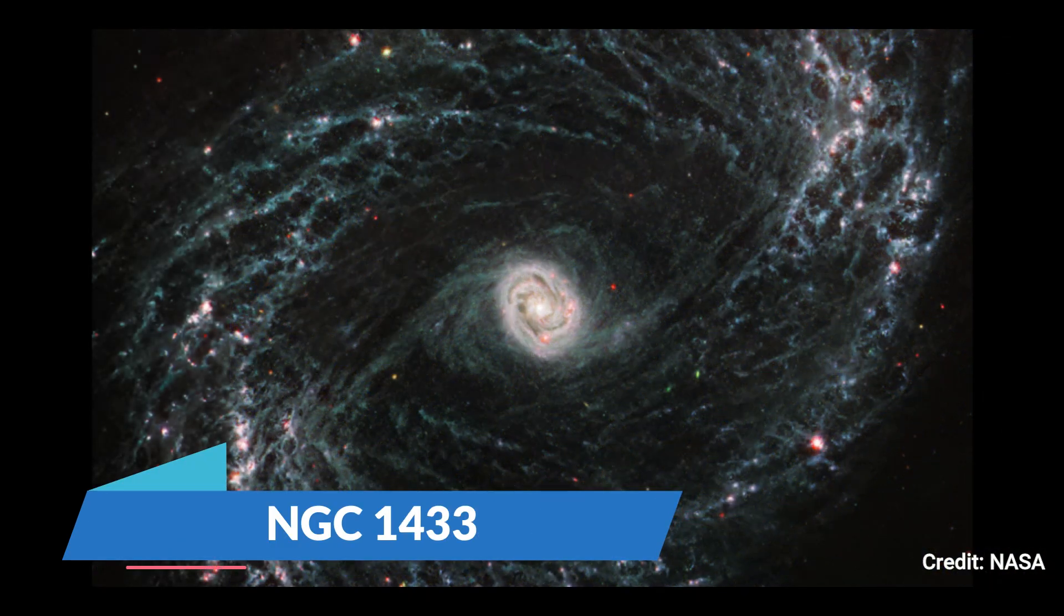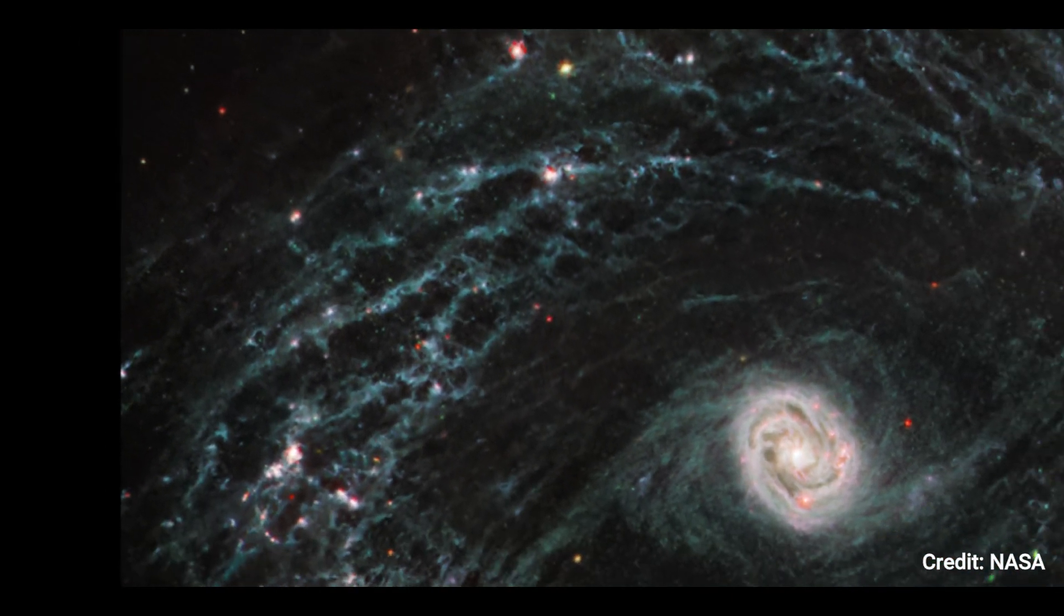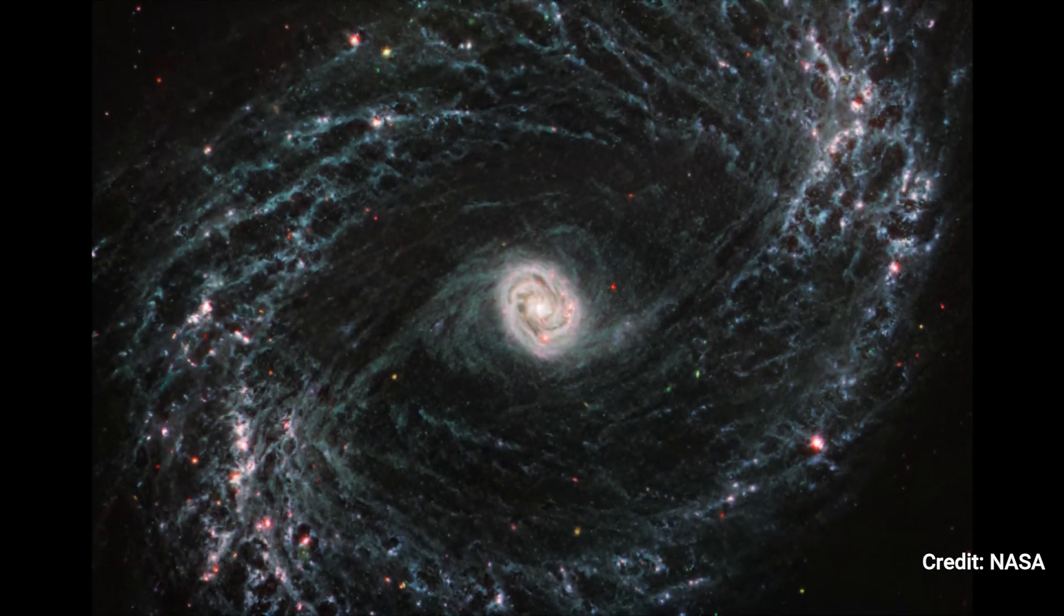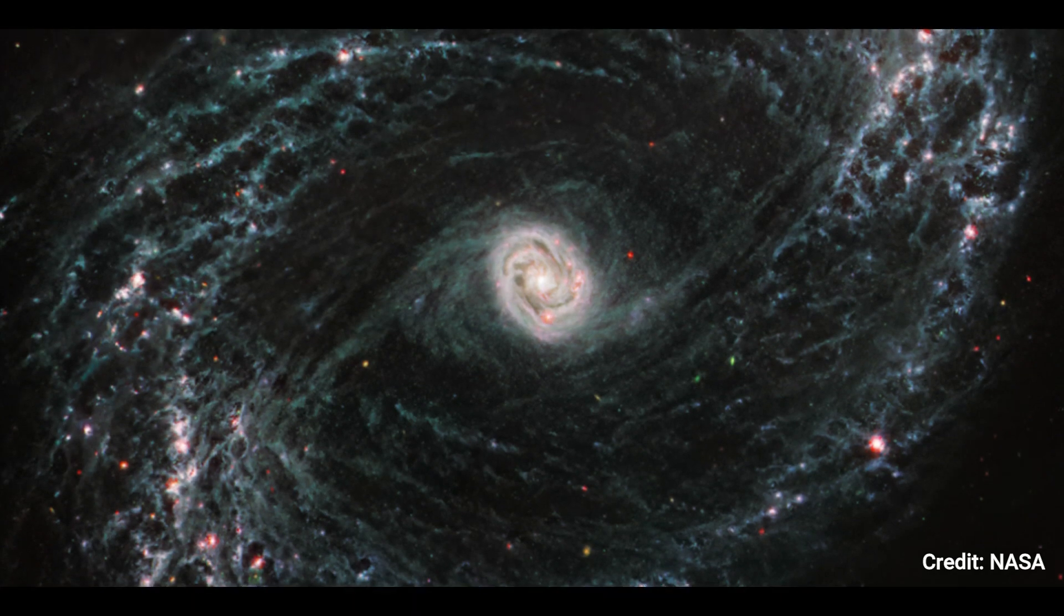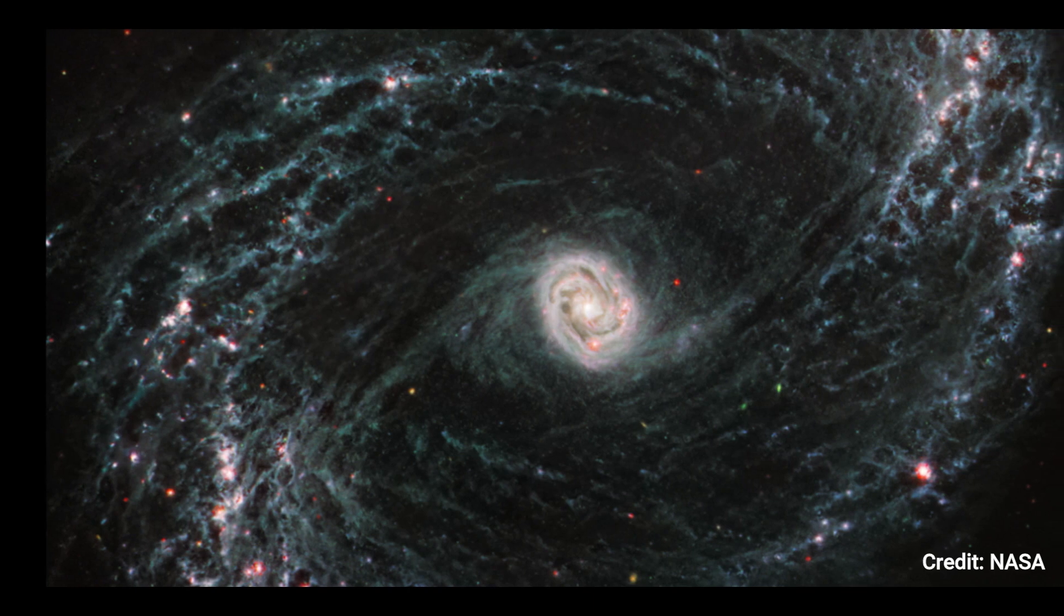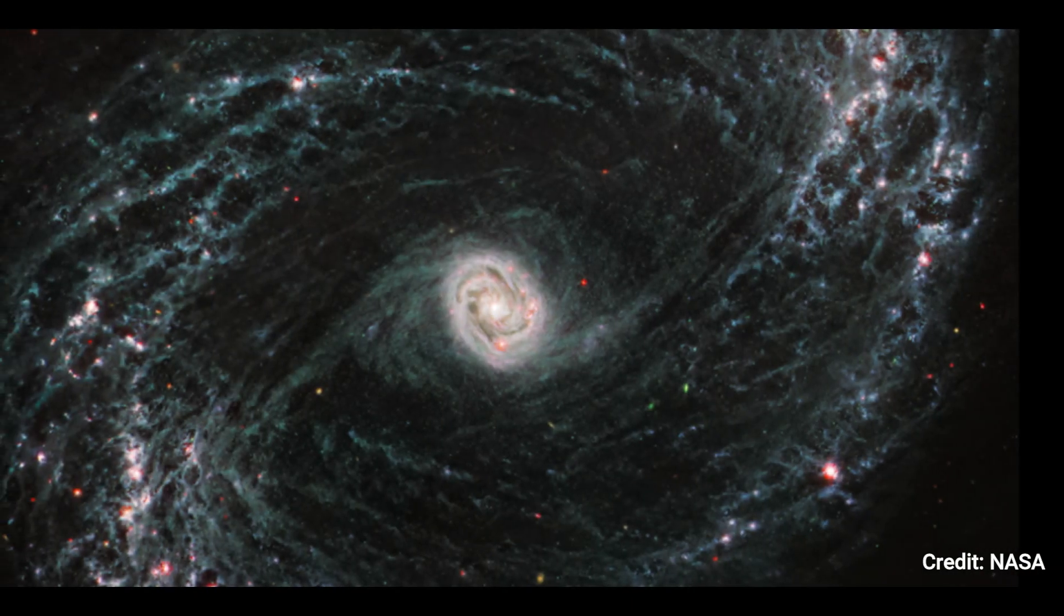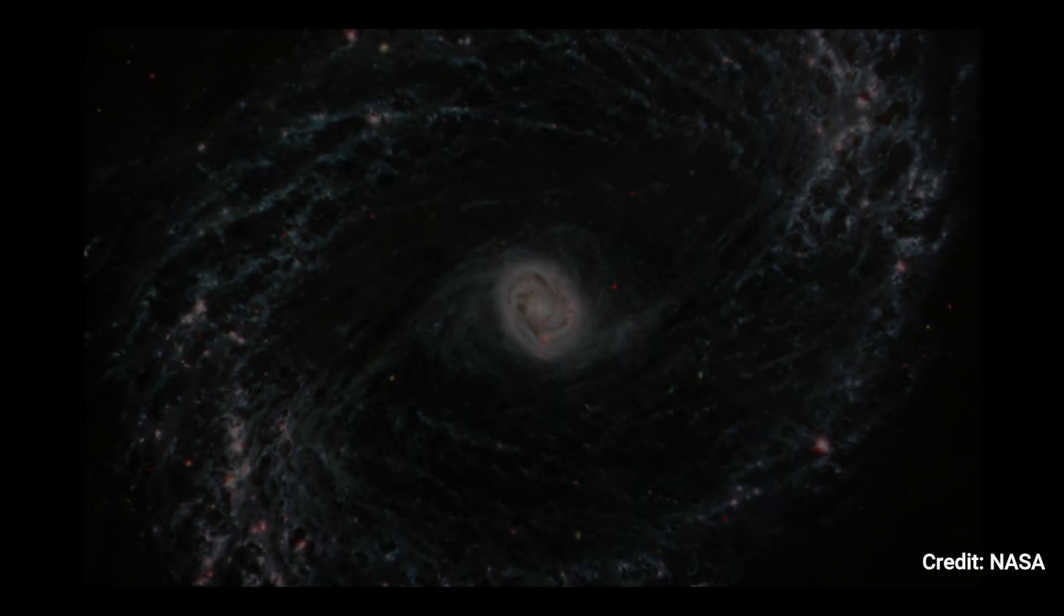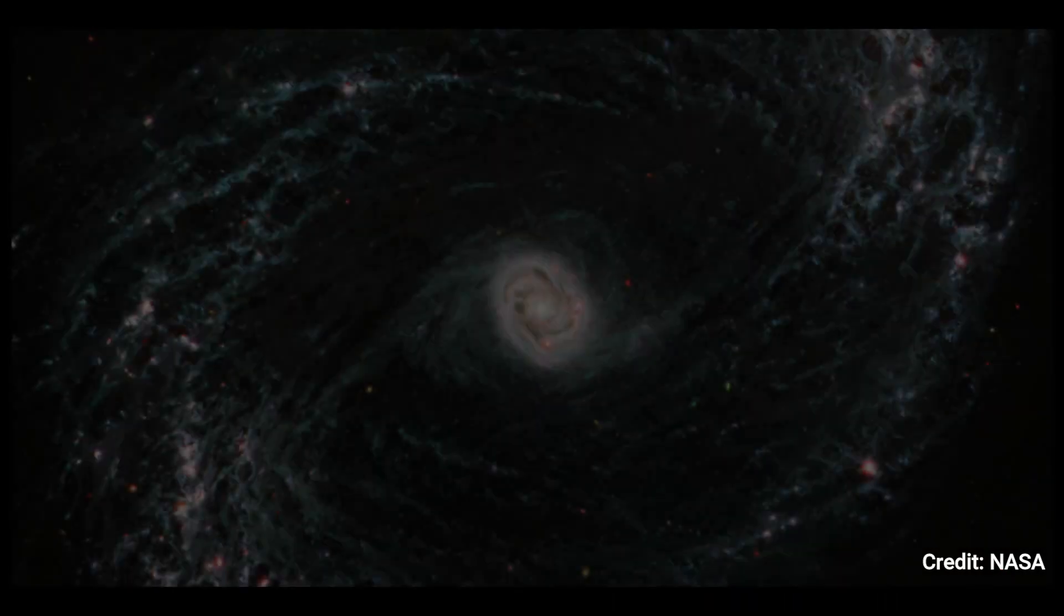Number 3: NGC 1433. The James Webb Space Telescope captured this image of one of 19 galaxies chosen for research by the physics at high angular resolution in nearby galaxies team. When seen with Webb's mid-infrared instrument, the nearby barred spiral galaxy NGC 1433 takes on a whole different appearance. The spiral arms of NGC 1433 are riddled with evidence of incredibly young stars releasing energy, and in some cases, blowing away the interstellar medium's gas and dust.